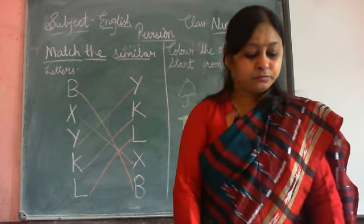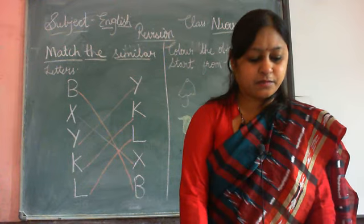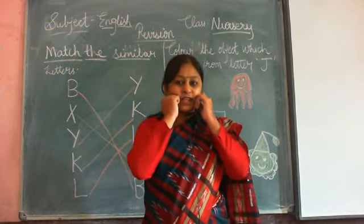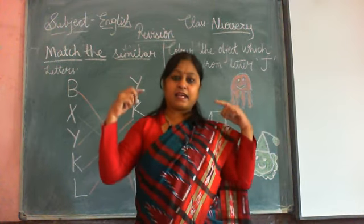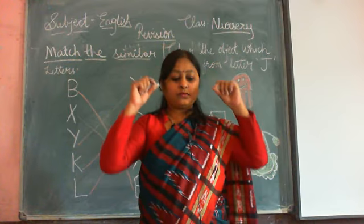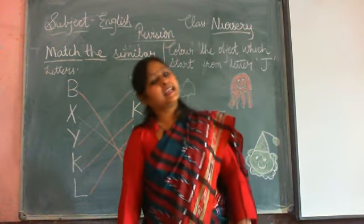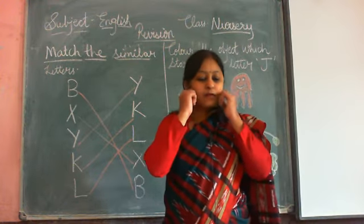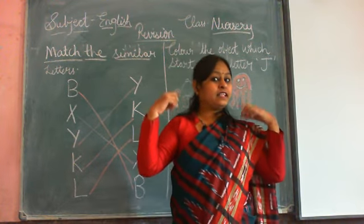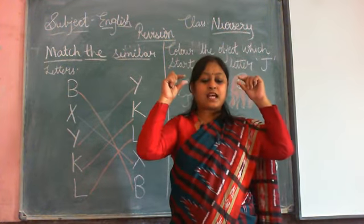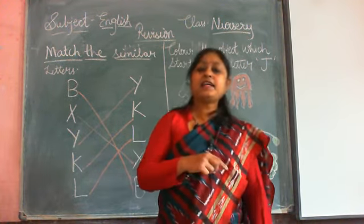Good, very good! Now the next rhyme is Chubby Cheeks. Let us start. Chubby cheeks, dimple chin, rosy lips, teeth within, curly hair, very fair, eyes are blue, lovely too, teacher's pet — is that you? Yes, yes, yes! Again: Chubby cheeks, dimple chin, rosy lips, teeth within, curly hair, very fair, eyes are blue, lovely too, teacher's pet — is that you? Yes, yes, yes!